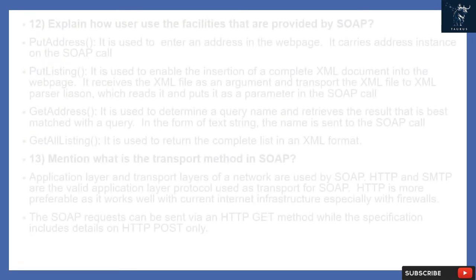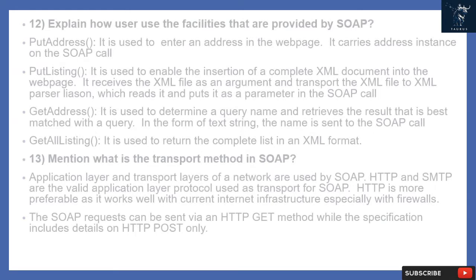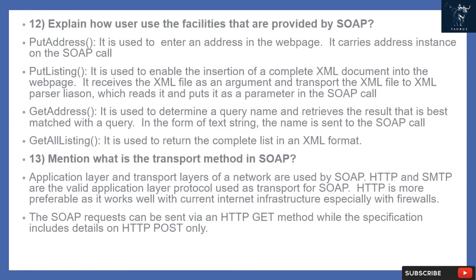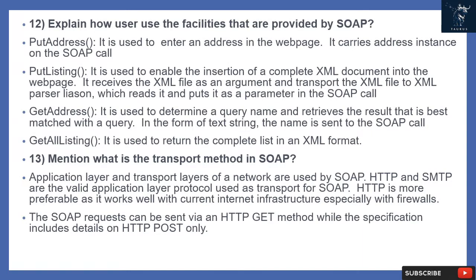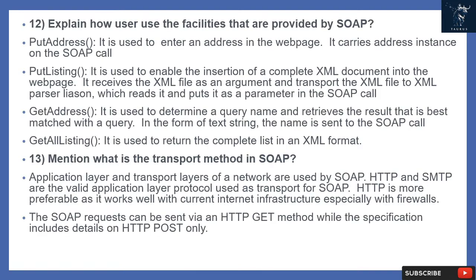Question 12: How do users use the facilities provided by SOAP? Put address — used to enter an address in a web page; it carries the address instance on the SOAP call. Put listing — used to enable insertion of a complete XML document into a web page; it receives the XML file as an argument and transports it to an XML parser liaison which puts it as a parameter in the SOAP call. Get address — used to determine a query name and retrieve the best-matched result as a text string. Get all listing — used to return the complete list in XML format.